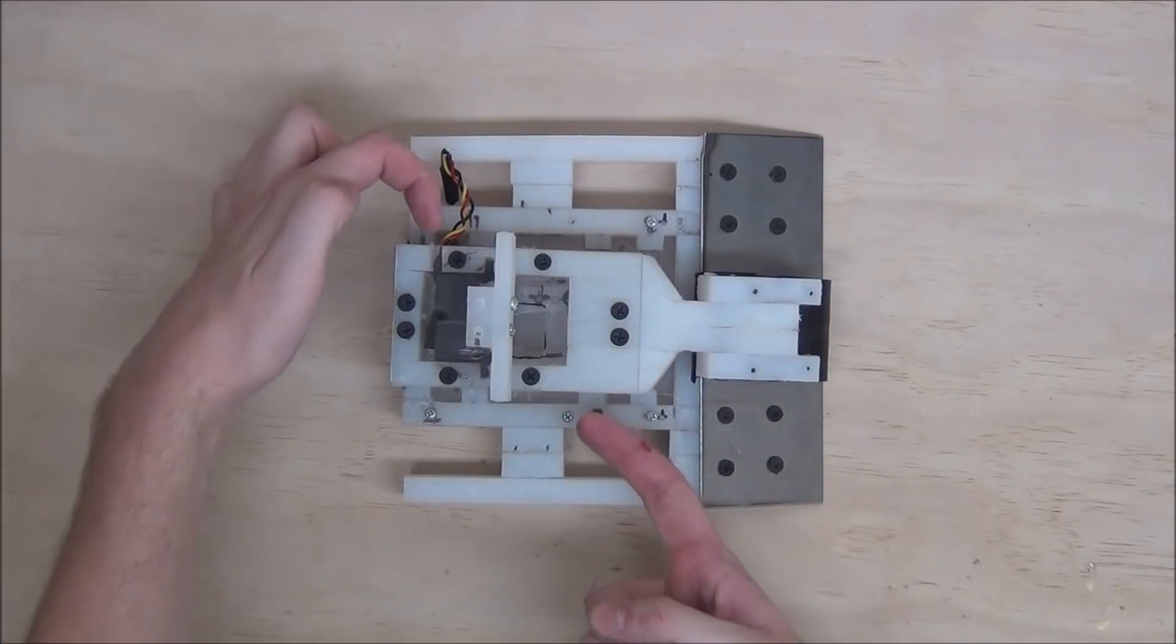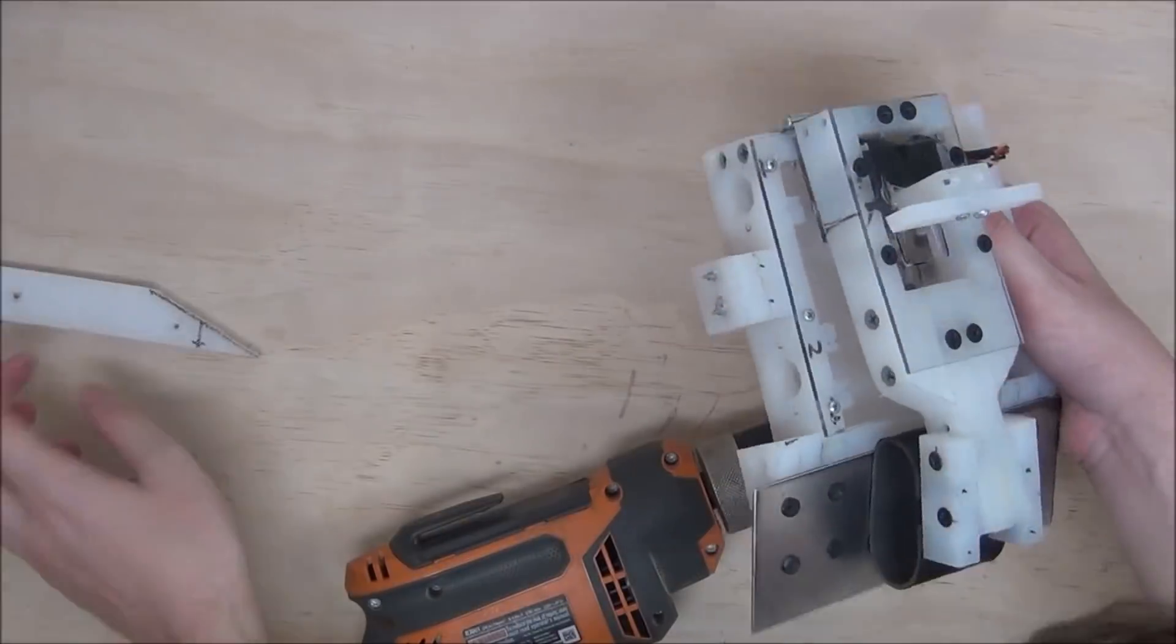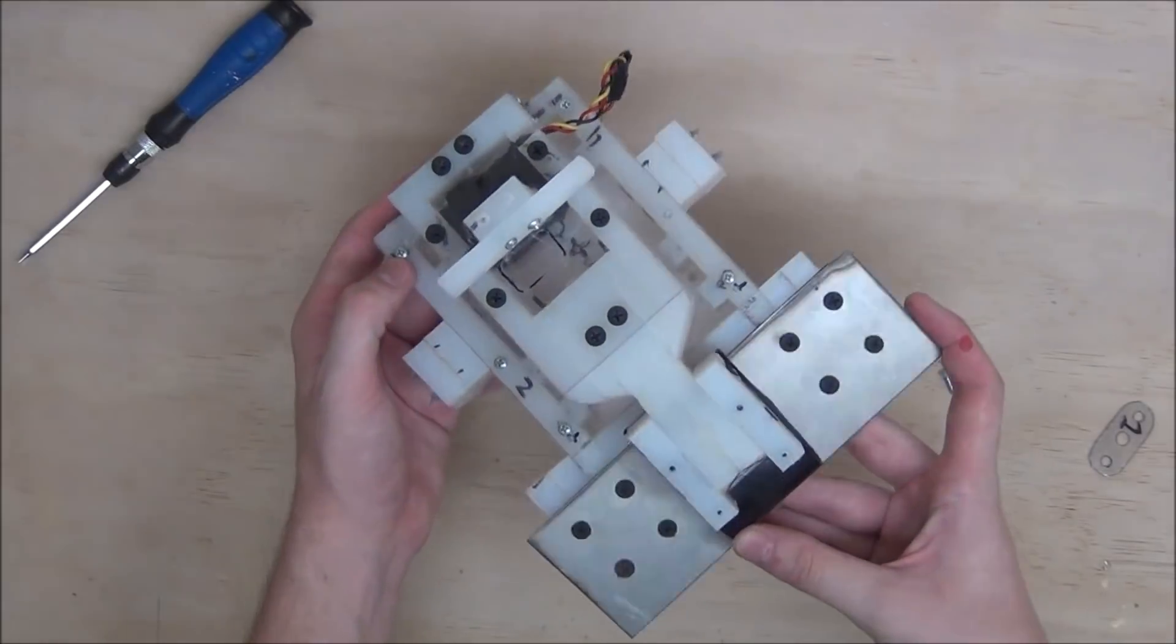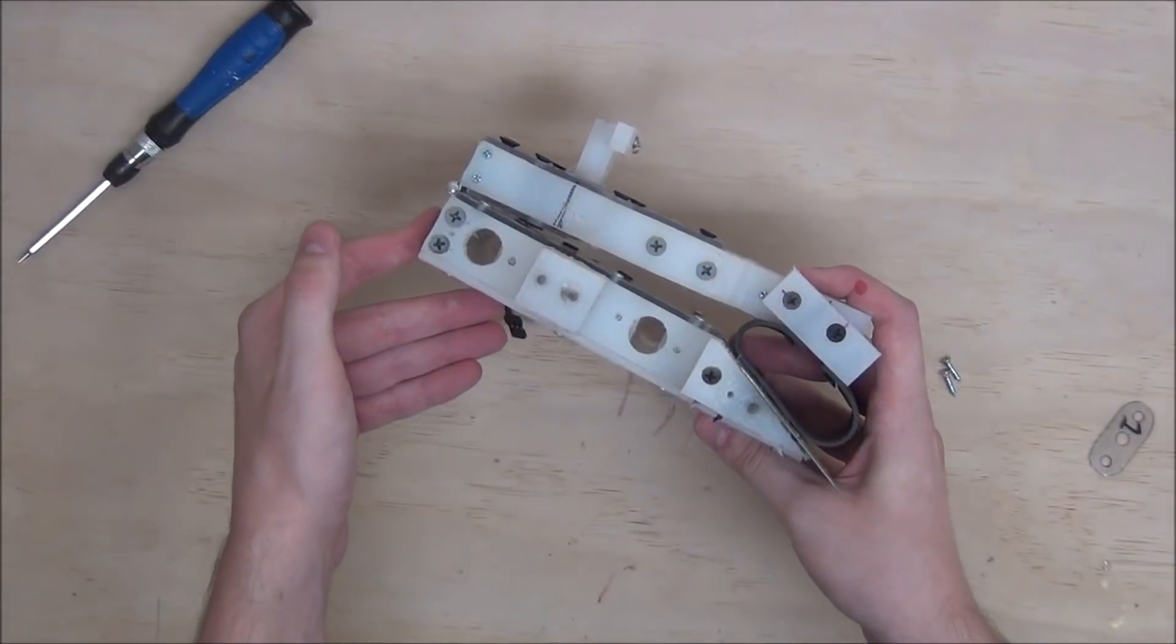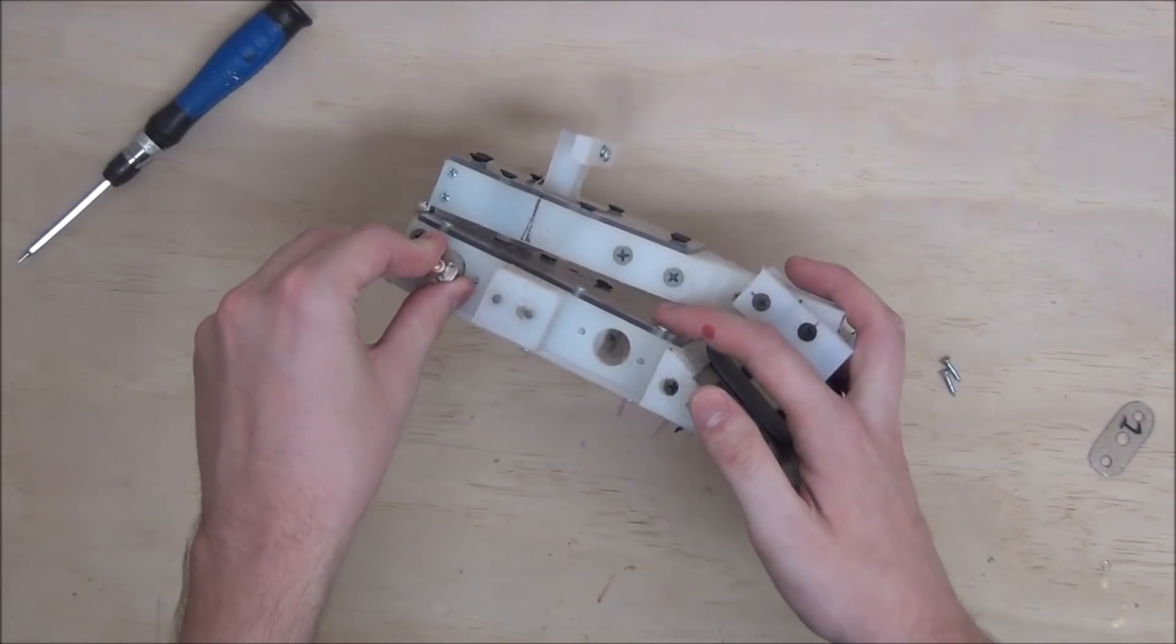But for now, let's remove the side panels and slip in the motors like we did in Part 1. Now, if you remember in Part 1, we just take our 6-volt, 1000 RPM motors and drop them into the motor mounts.